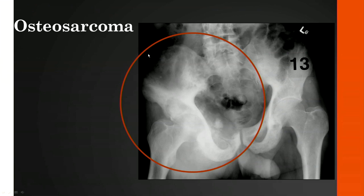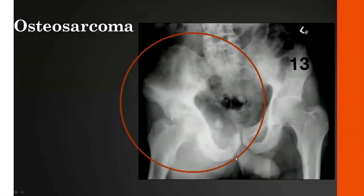Here you have a radiograph with evidence of prior Paget's in the right hemipelvis. On this radiograph, there is complete lysis of the pubic ramus superiorly, a large soft tissue mass around the pelvis, and ossific mineralization within the soft tissue component—this is degeneration into osteosarcoma. Upon observing this radiograph, you should request cross-sectional imaging to further characterize the extent of disease.